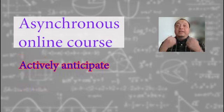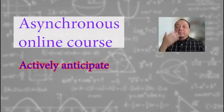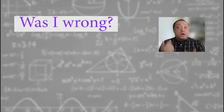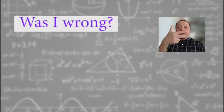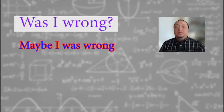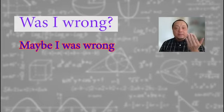By actively anticipating, your brain will be continuously comparing between what you think was going to happen and what actually happens. If you anticipate one thing and the professor does something else, your brain will have to decide, was I wrong? Then three things could happen. One, maybe I was wrong. Then think, what happened? Why was I wrong? What did I miss?